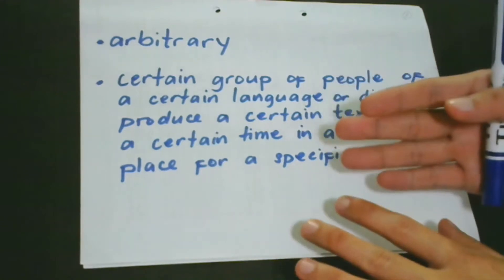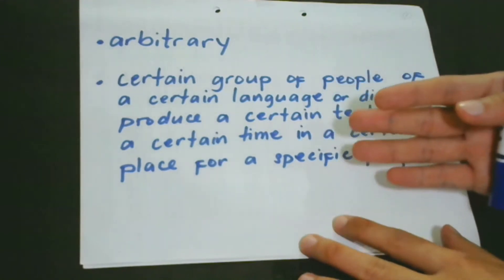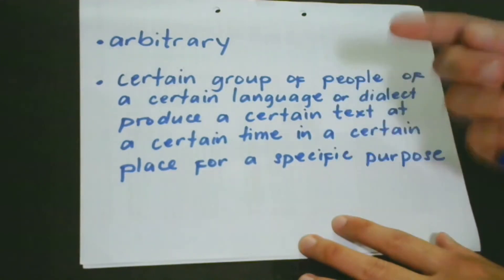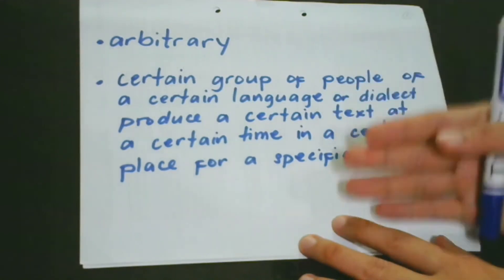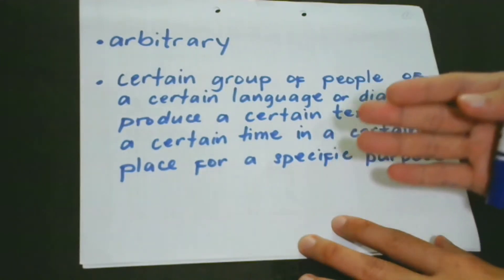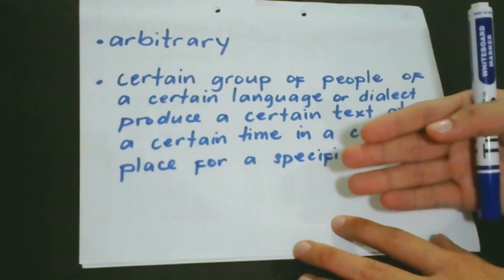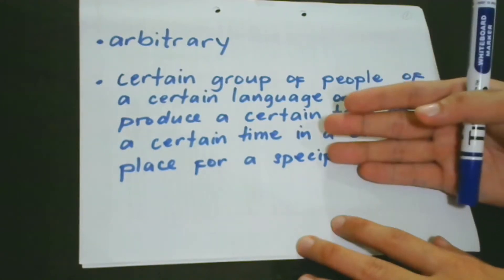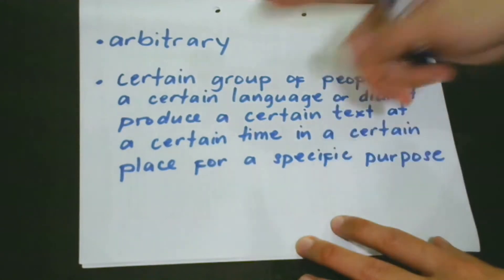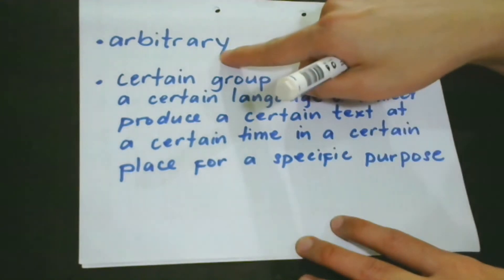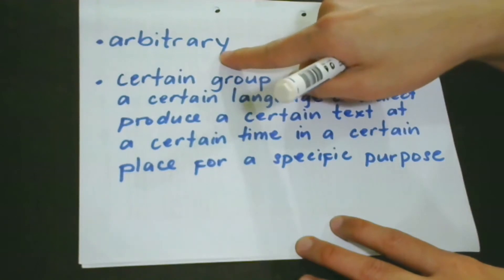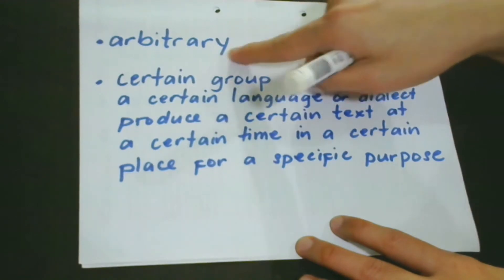Are you not wondering why we call our eyes 'eyes' and not 'nose'? Because in linguistics, we call this arbitrariness, or just being arbitrary, of a certain language.